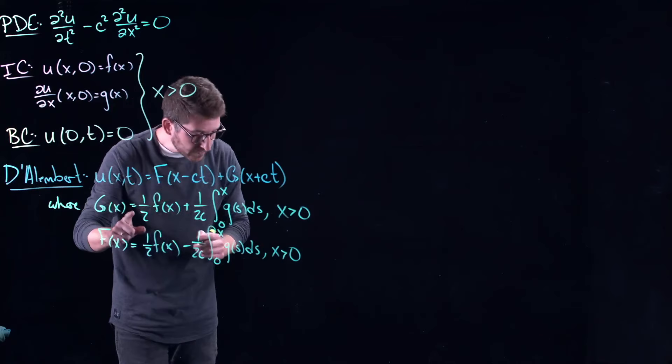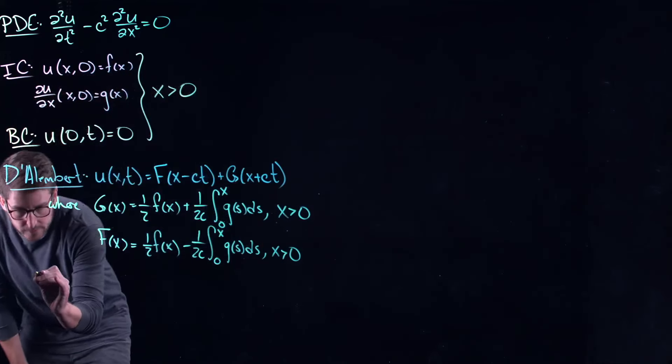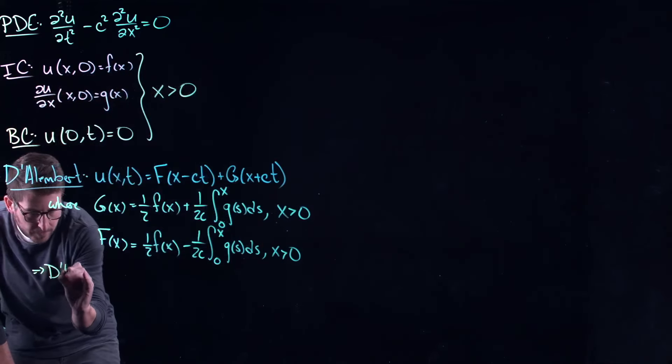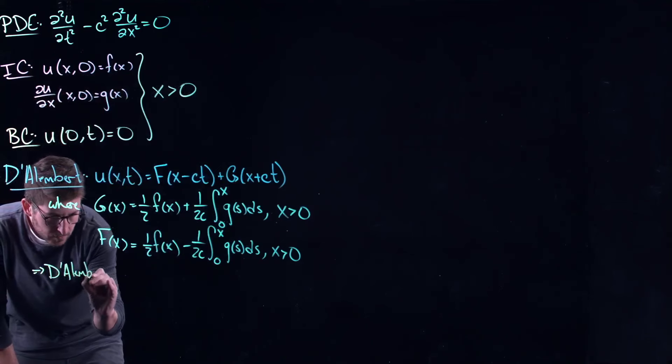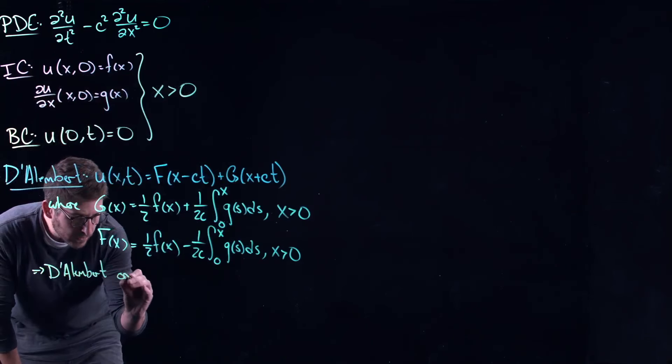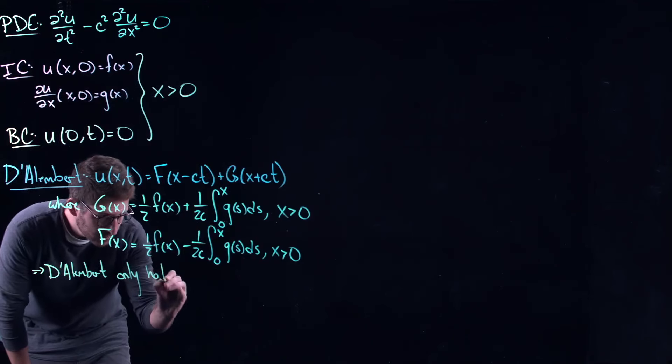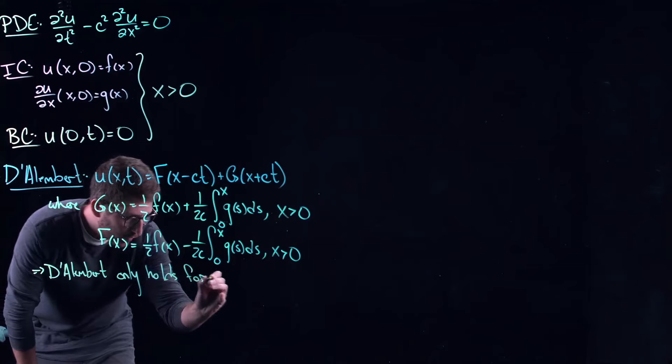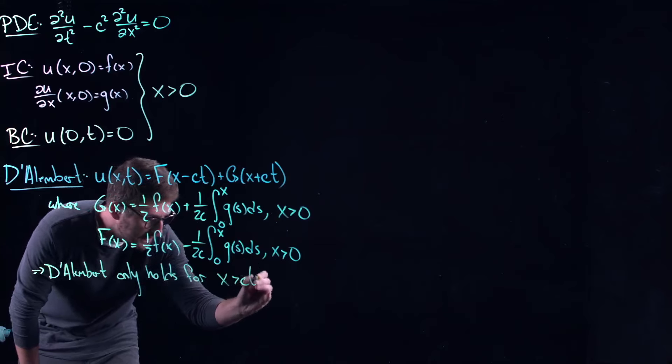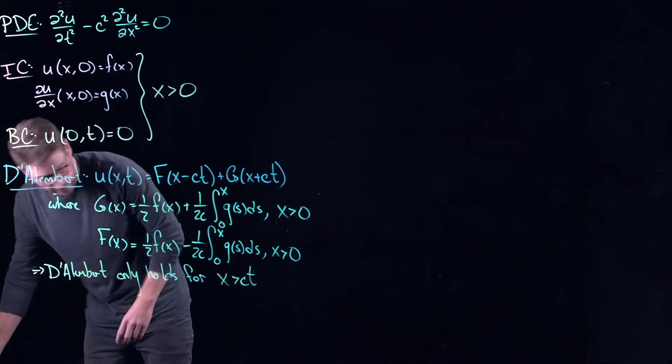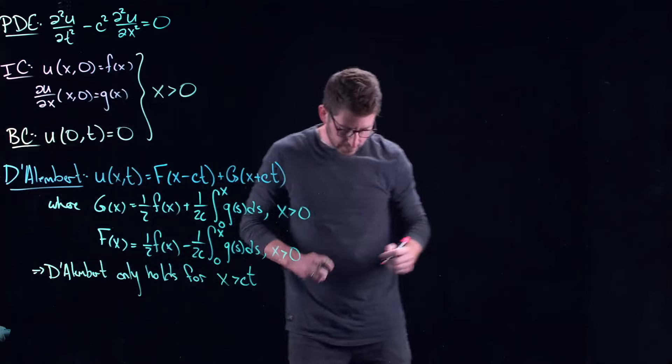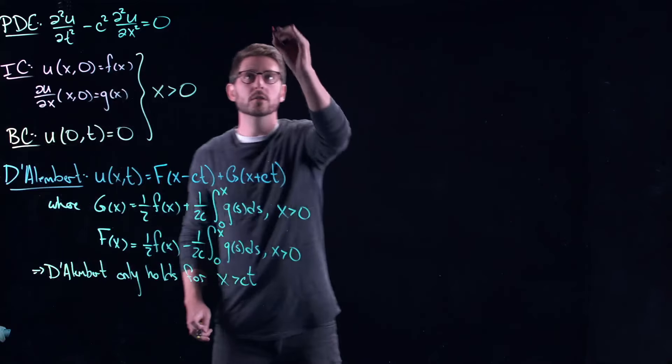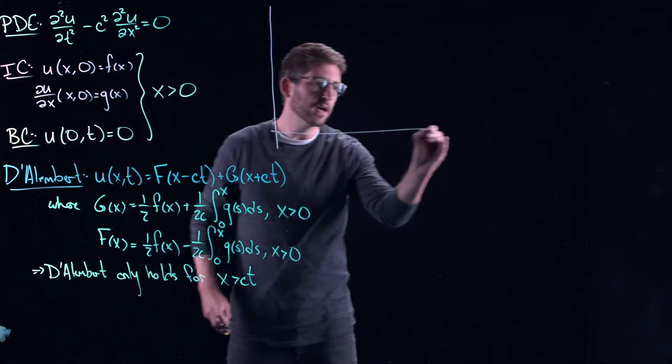So putting this all together gives D'Alembert's solution. But this implies that D'Alembert only holds for x bigger than ct, right?